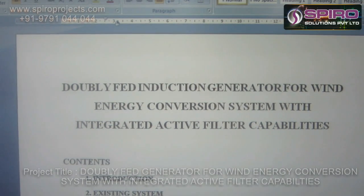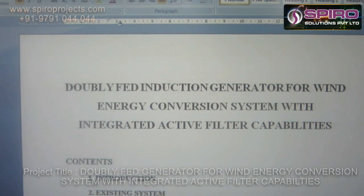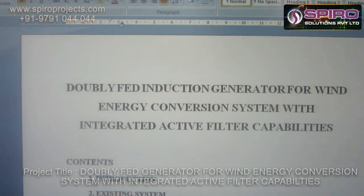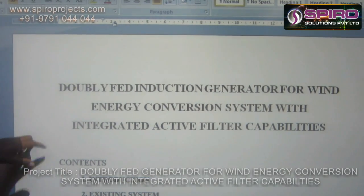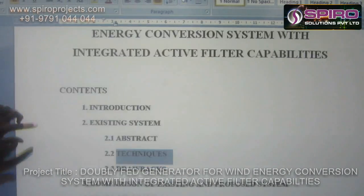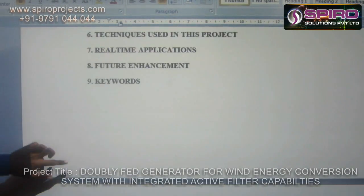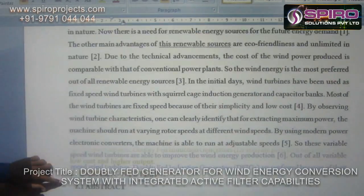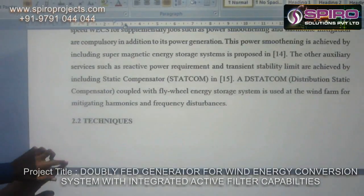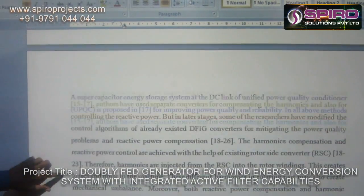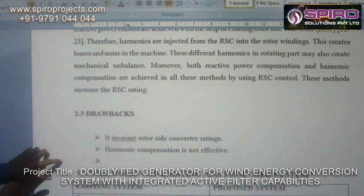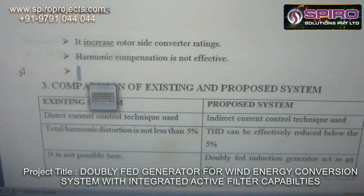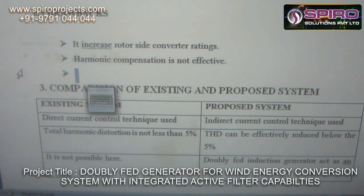For example, if I use renewable sources, I can't be able to maintain constant power into the grid. That's why I am using the techniques for this project. This is the wind source. If I use the wind source, I didn't able to maintain constant power to the load. But in my project, I can be able to maintain constant power to the load.